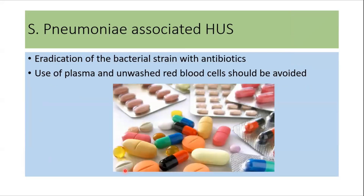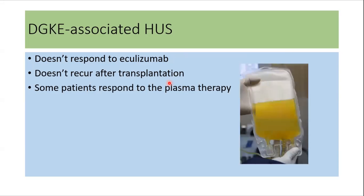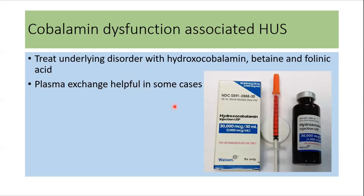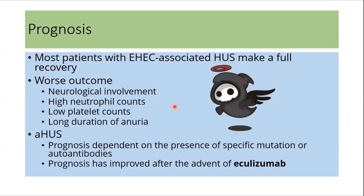For Streptococcus pneumoniae-associated HUS, eradication of the bacterial strain with antibiotics is the treatment. DGKE-associated HUS does not respond to eculizumab, and some patients respond to plasma therapy. For cobalamin dysfunction-associated HUS, we need to treat the underlying disorder with hydroxocobalamin, betaine, and folinic acid. Plasma exchange has been shown to be helpful in some cases.